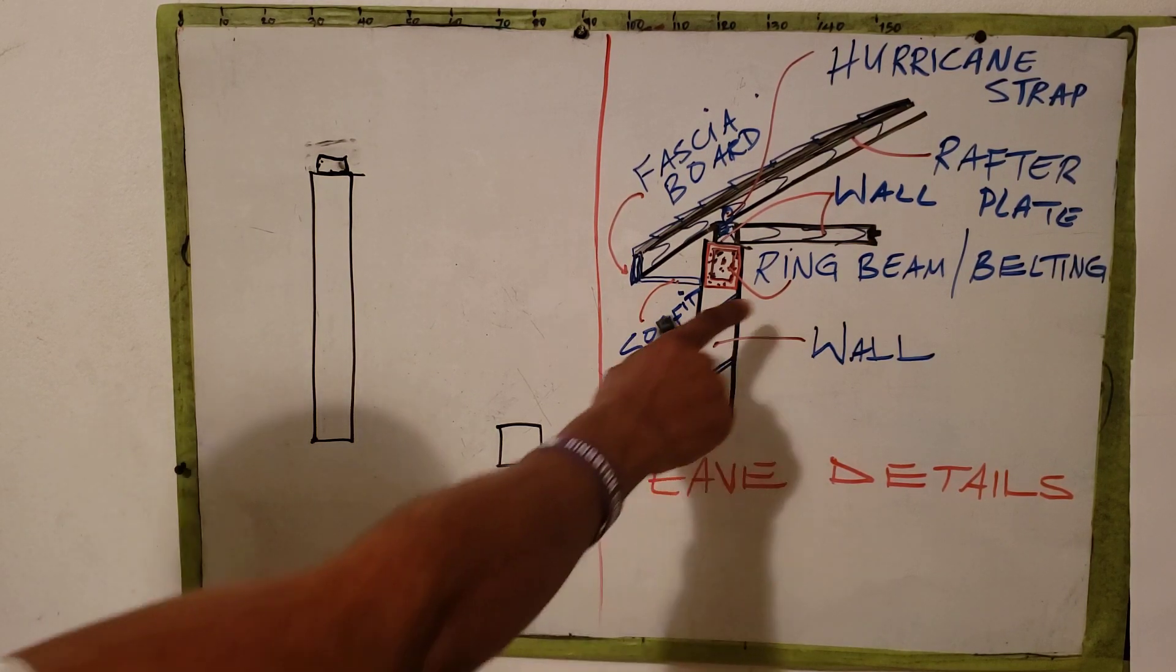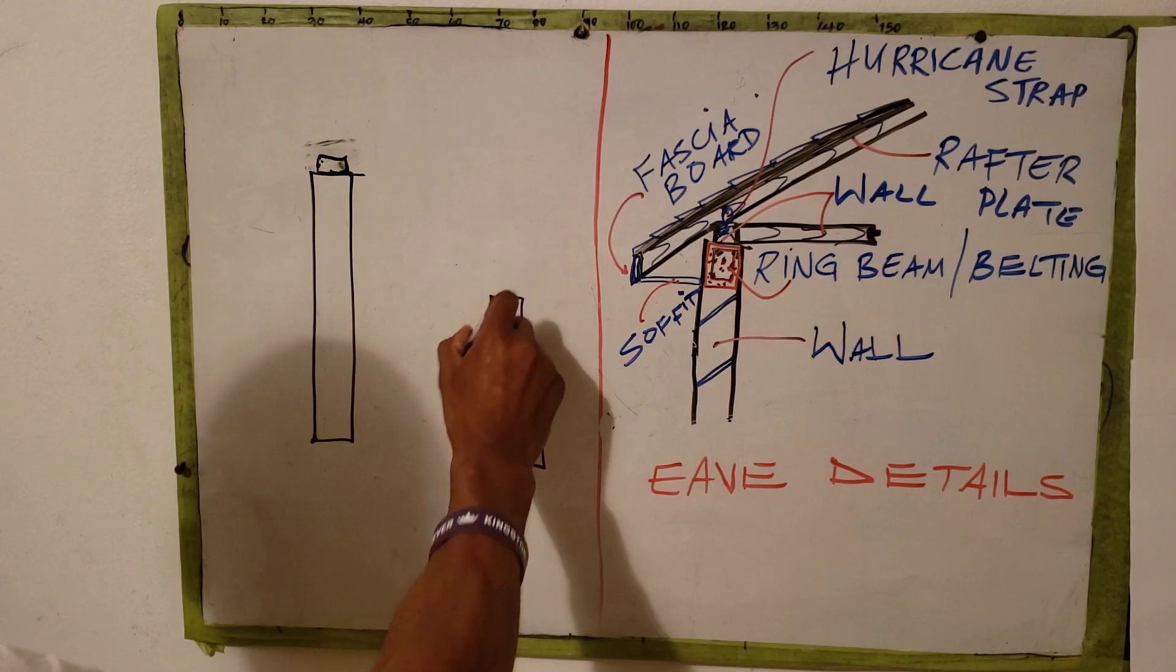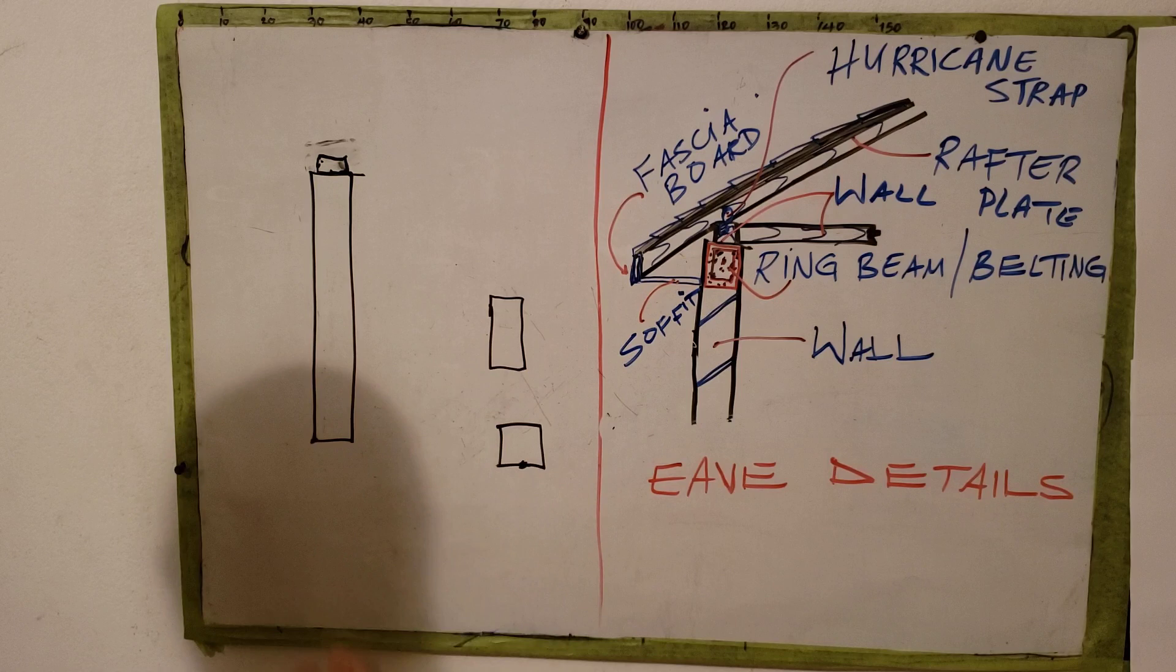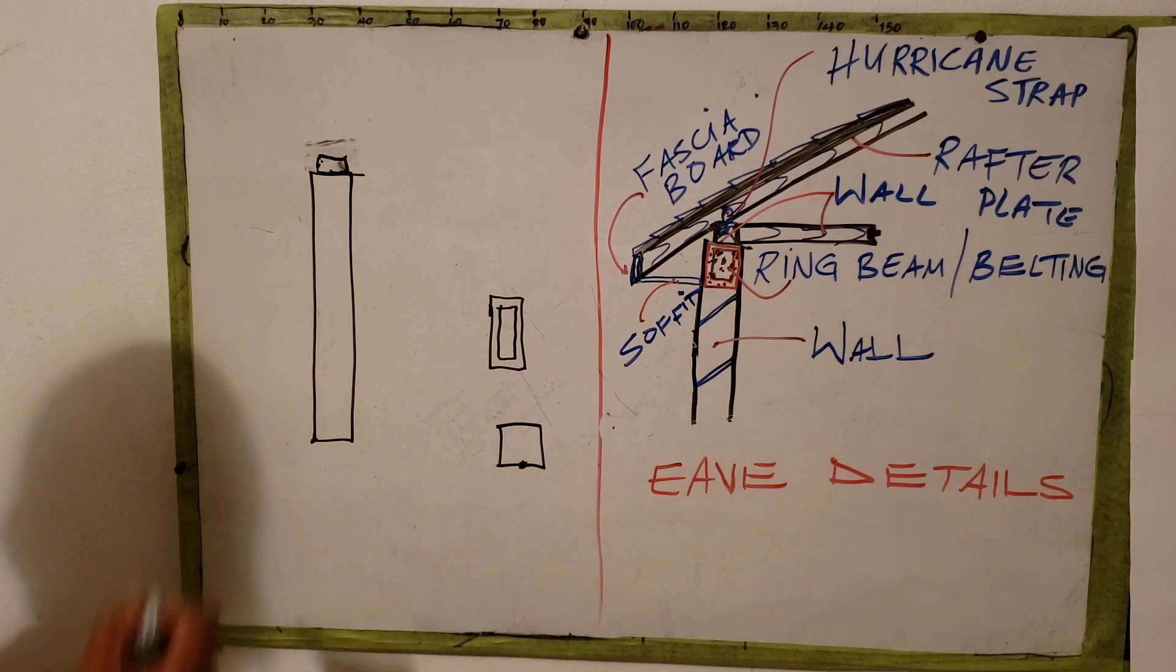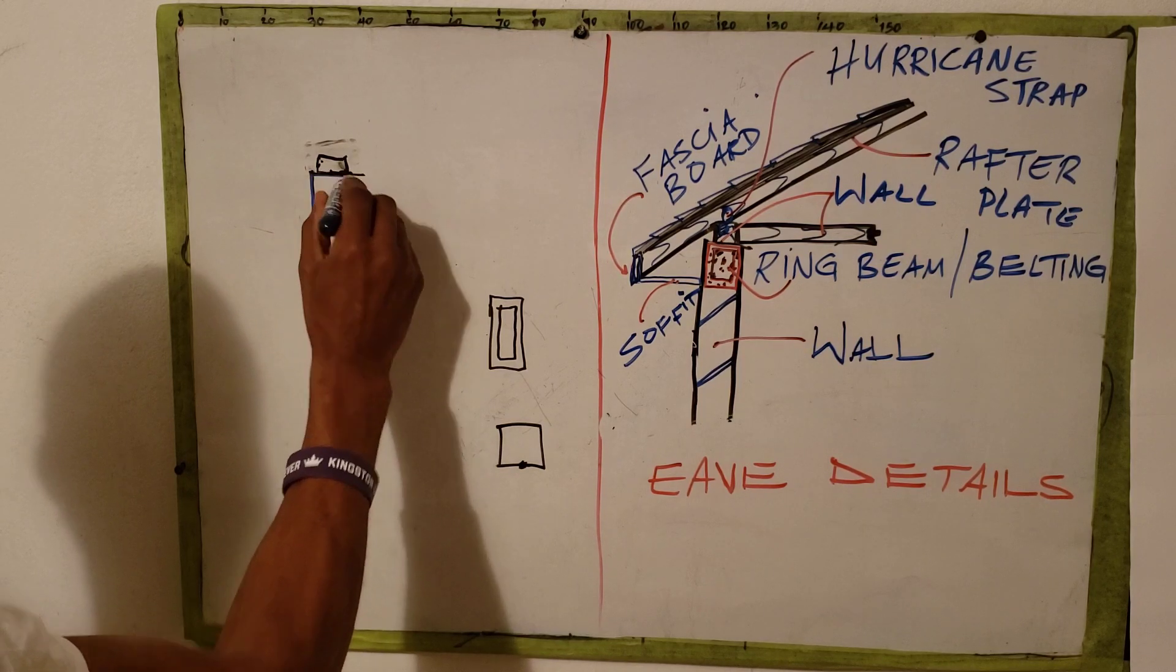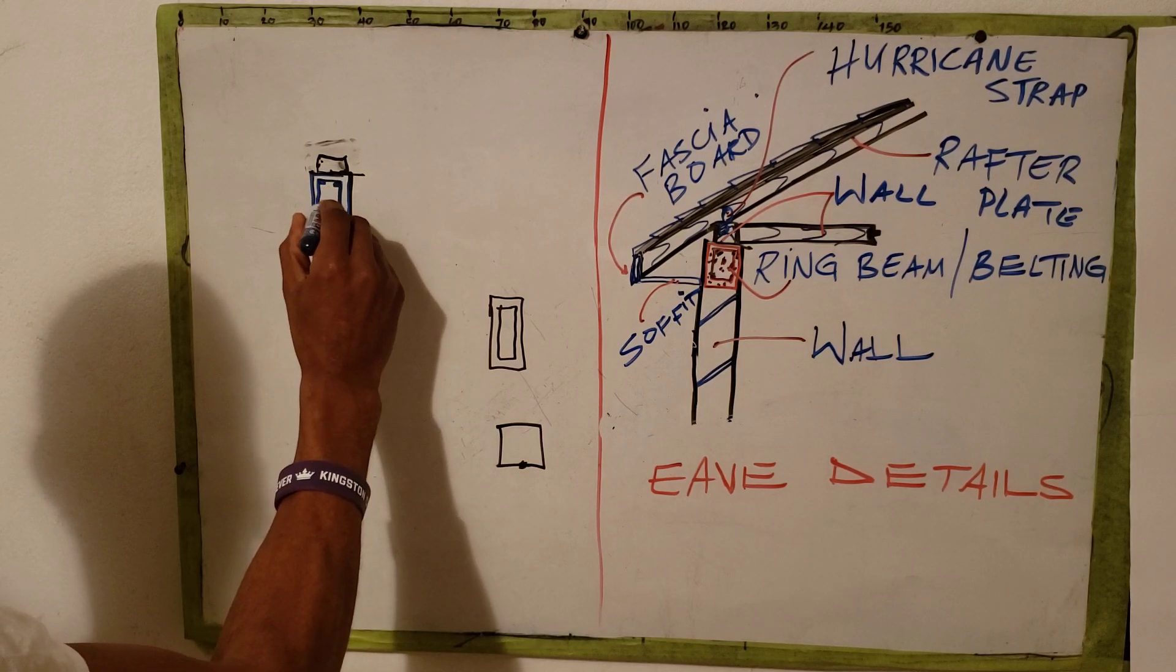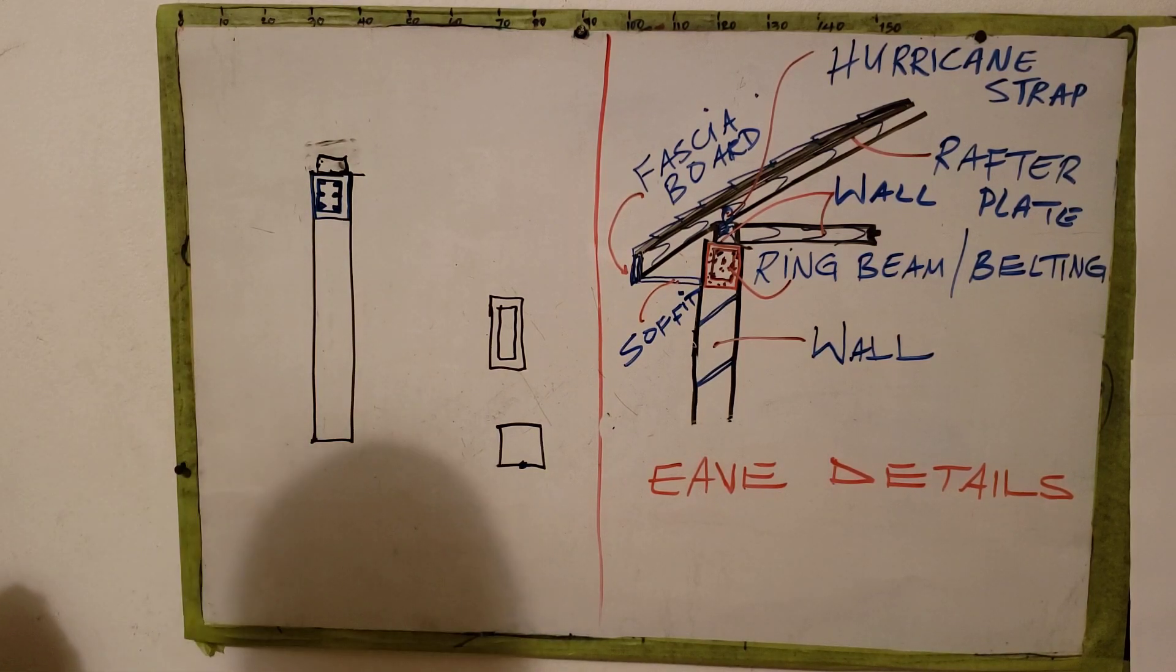Next we can draw the ring beam or the belting, and that is 150 by 300. You then offset this by 25 to get the stirrup. Or for sketch purposes, we would start drawing that here, then we will sketch a parallel line there, and of course you would add your six steel bars.